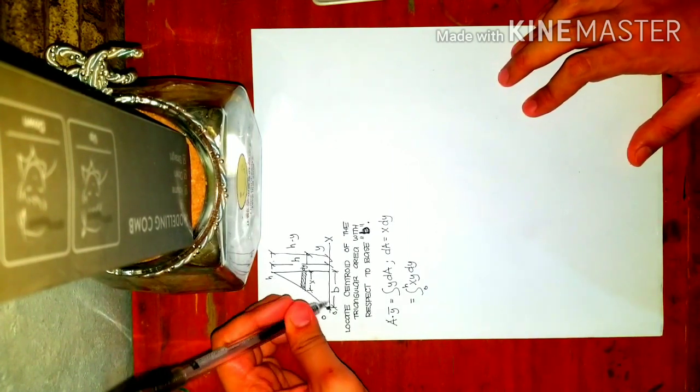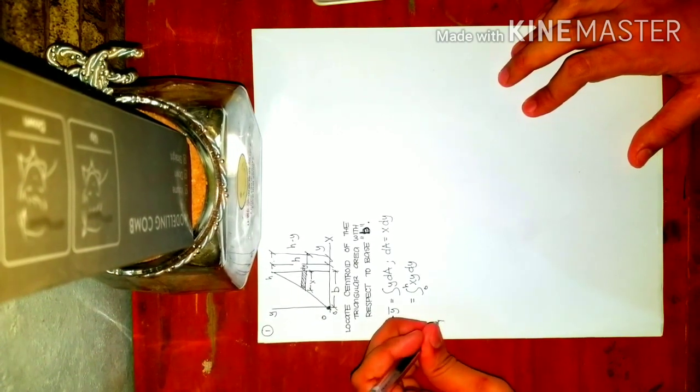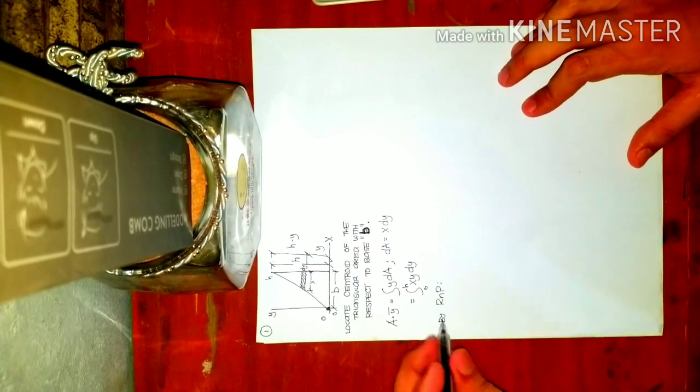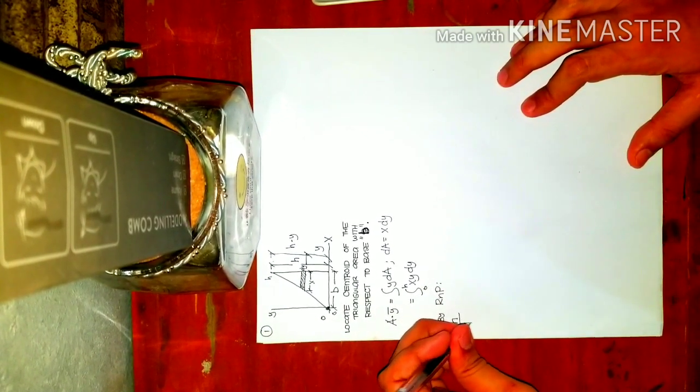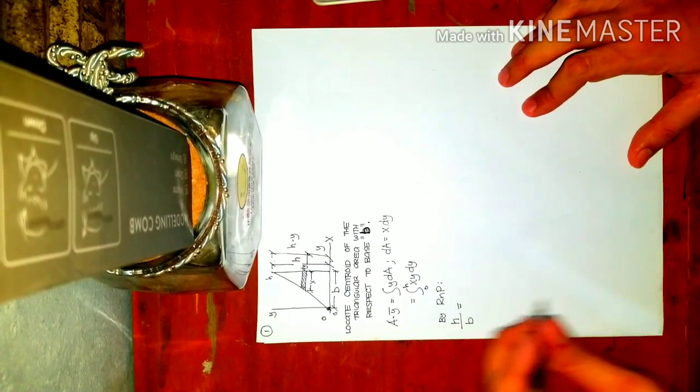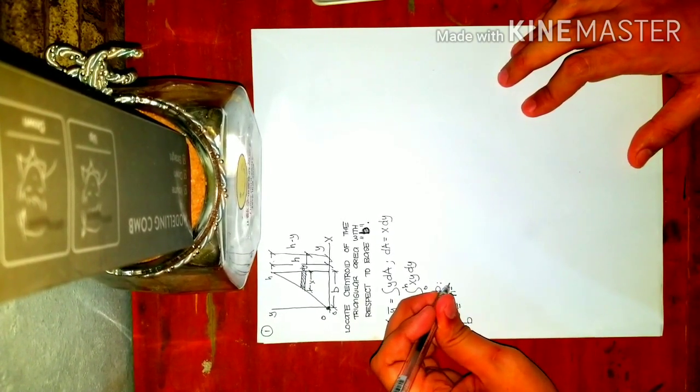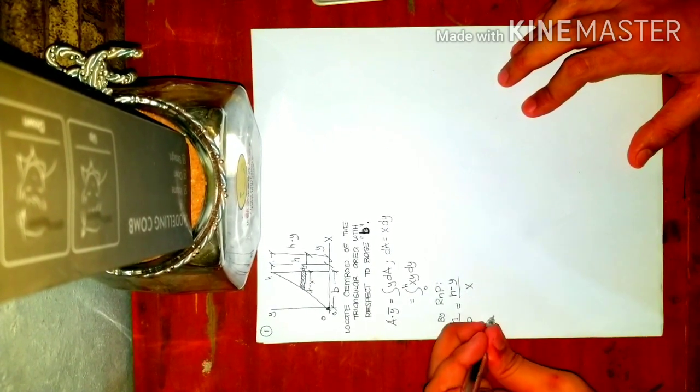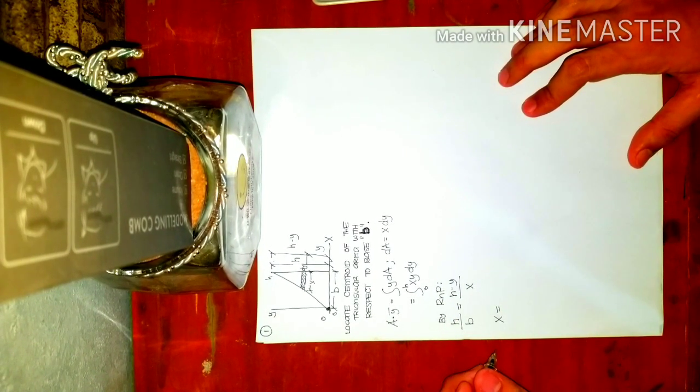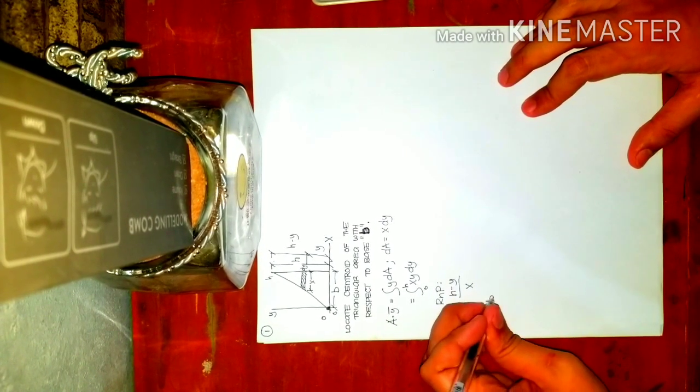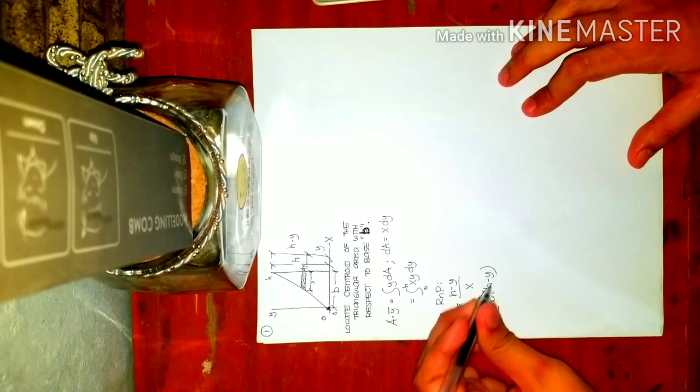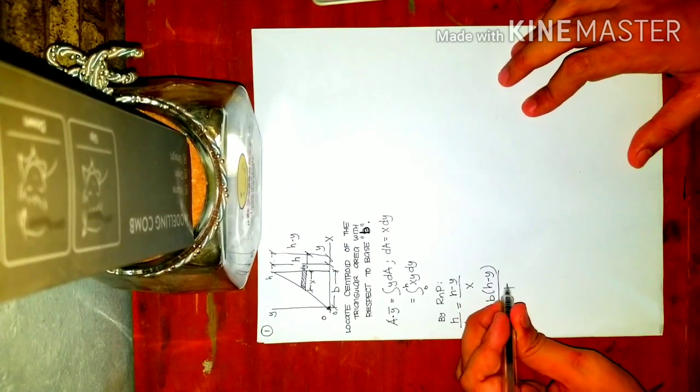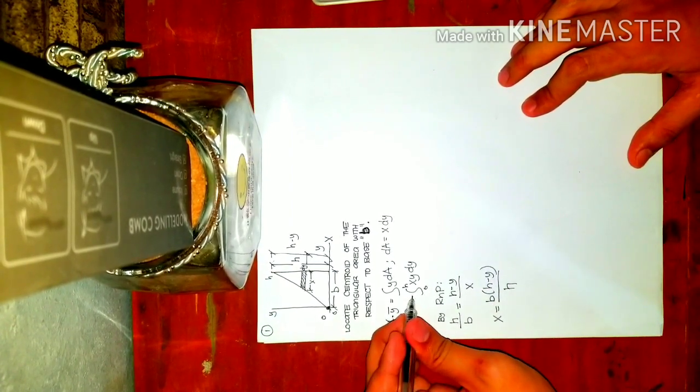First, let's consider the big triangle. By ratio and proportion, h over b equals h minus y over x. When you solve for x, the equation will be x equals b multiplied by h minus y over h. Now, going back, A times y bar equals...